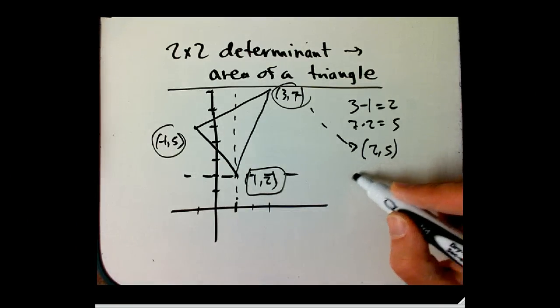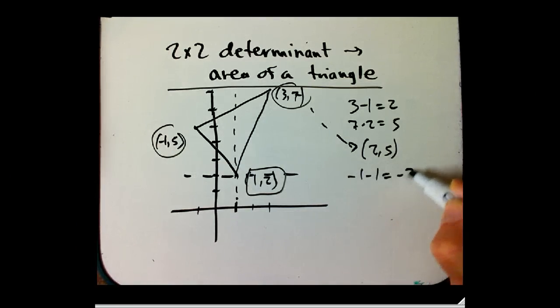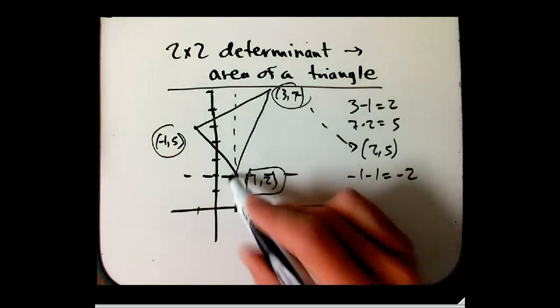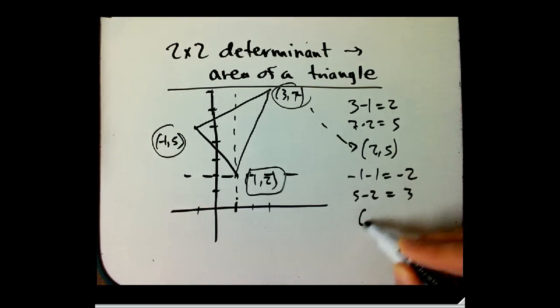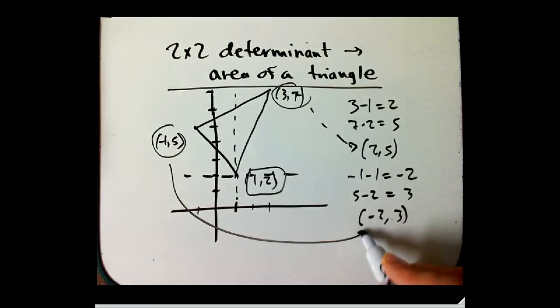And then this one, minus 1 minus 1, that's minus 2, because there's 2 units left from our new origin. And then 5 minus 2 is 3, so minus 2 comma 3 is the new version of this guy.